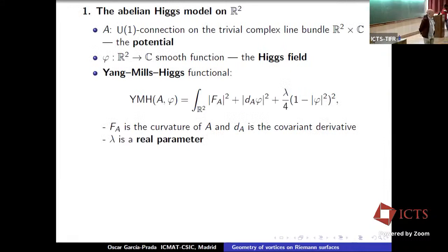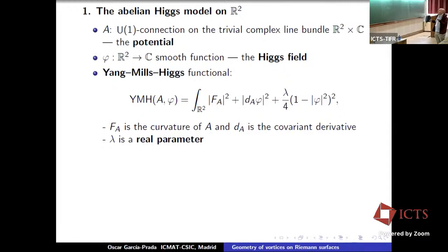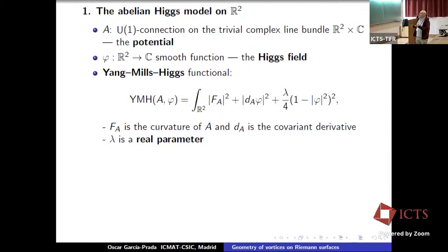To make Martin happy, I will start by talking about vortices on R², the Abelian-Higgs model on R². Nuno has already introduced us to vortices — there is some repetition of what he said, but I find repetition always useful. We consider a U(1) connection on a complex line bundle over R², necessarily trivial. The connection one-form is given by this potential, and then the Higgs field, which is a smooth complex function. One has the Yang-Mills-Higgs functional, obtained by integrating the L² norm of the curvature, the L² norm of the covariant derivative acting on φ, and then this quartic term in φ.